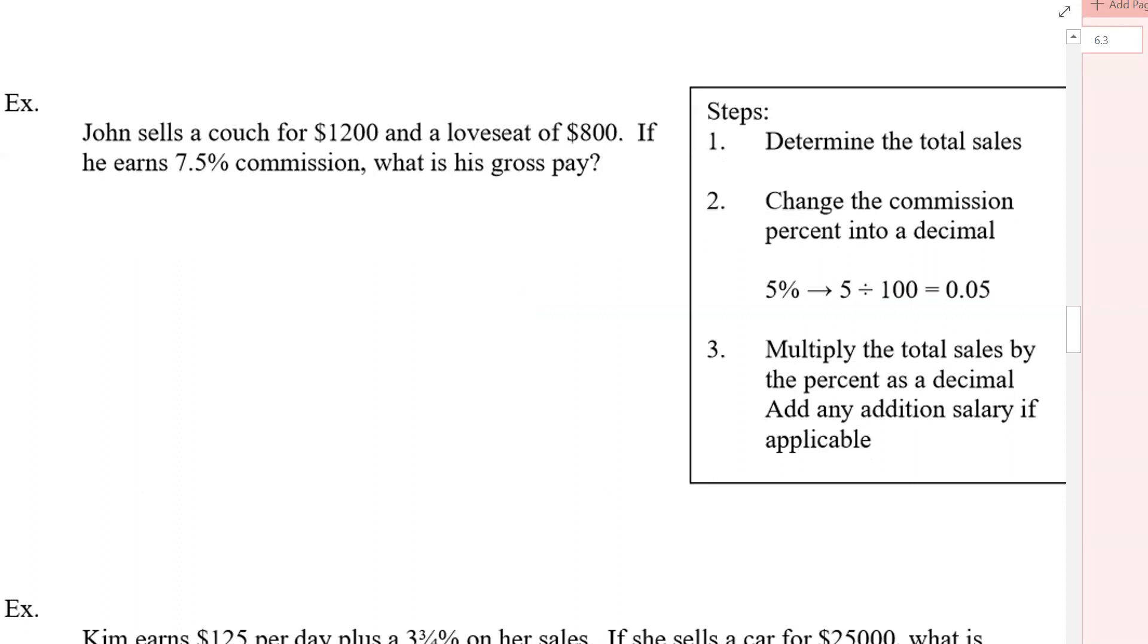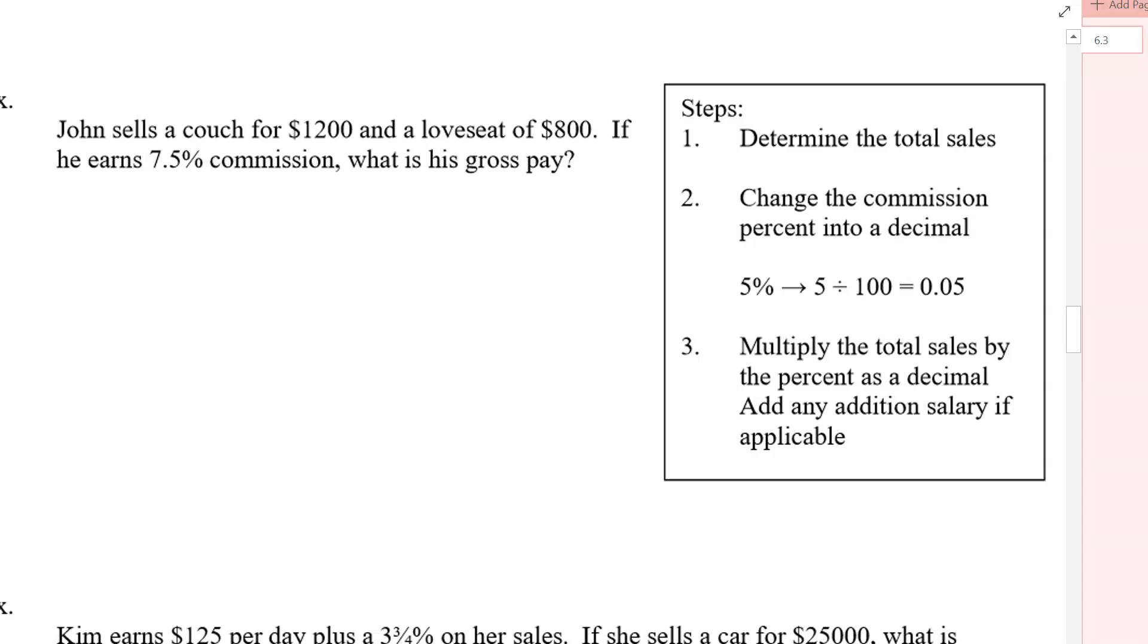Okay, I've got one more example here. It says, John sells a couch for $1,200 and a loveseat for $800. If he earns a 7.5% commission, what is his gross pay? So the first part is determine the total sales. So the total sales is going to be, well, we're just going to add those two together, $1,200 and $800. So the total sales is $2,000.